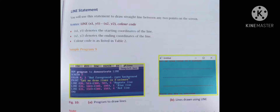Sample program to demonstrate the LINE statement: COLOR 4, 3 — red foreground and cyan background. PRINT 'Let me draw lines in three colors.' Line (20,50)-(350,50), 5 draws a magenta line. Line (20,100)-(300,100) draws a blue line. Line (21,50)-(300,150), 4 draws a red line. The output shows three lines drawn using the LINE statement.